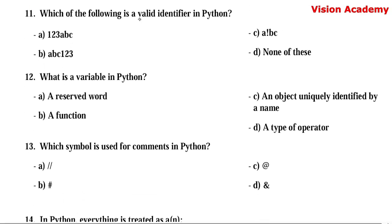Question number 11. Which of the following is a valid identifier in Python? Option A: 123ABC. Option B: ABC123. Option C: A!BC. Option D: none of these. We have to follow all the rules for declaring an identifier in Python: it must begin with an alphabet or underscore, should not have any special symbols, and should not be a keyword. Option A begins with numbers — invalid. Option C has an exclamation mark (special symbol) — invalid. Option B begins with letters A, B, C and then numbers, with no special characters and is not a keyword. Hence, option B — ABC123 — is a valid identifier in Python.